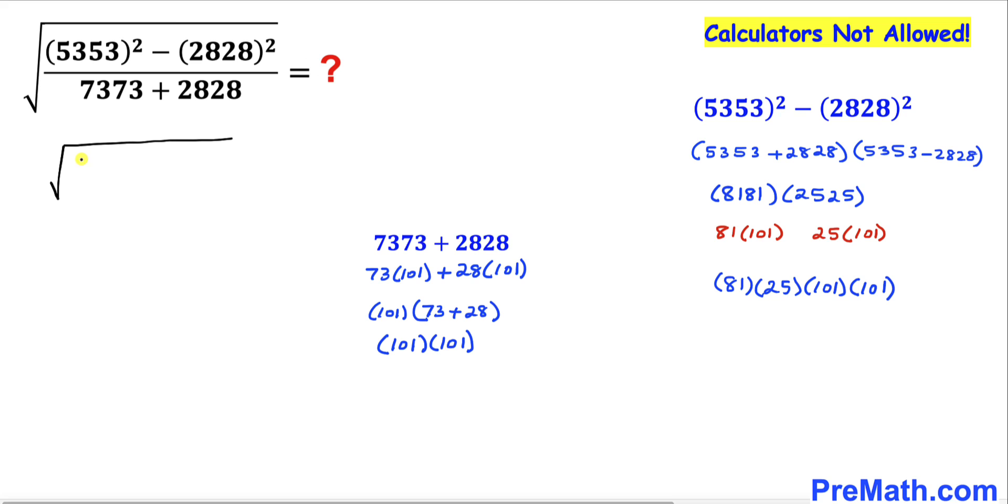Therefore, we can write: the radical on the numerator is going to be 81 times 25 times 101 times 101, divided by this denominator, 101 times 101.